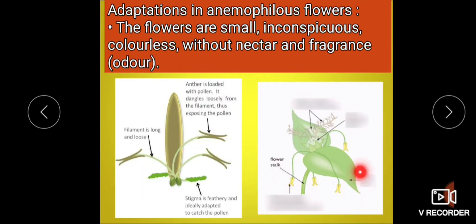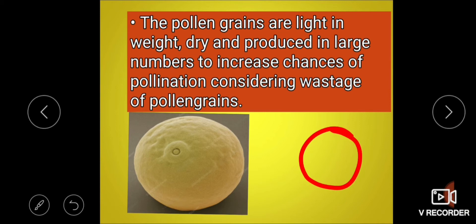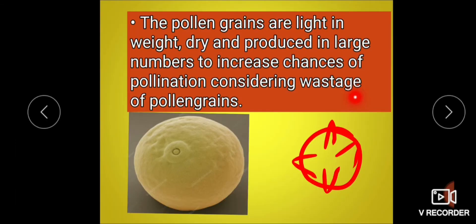A single enlarged spikelet of this plant is shown. The pollen grains are light in weight. Pollen grains are smooth, without any ornamentation. In insect-pollinated plants, pollen grains are spiny, but here they are smooth, light in weight, and produced in large numbers — as there may be wastage due to an unfavorable direction of wind.